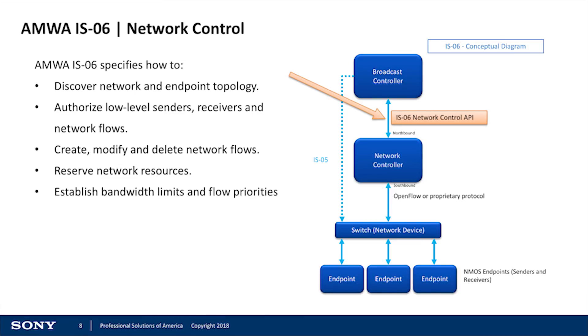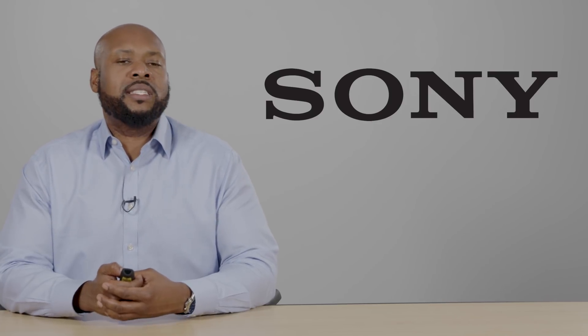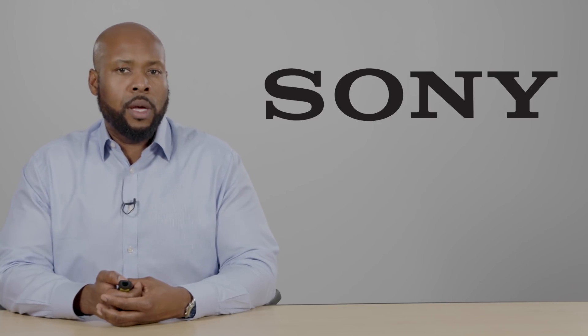IS-06 speaks to network control. It specifies how to discover network and endpoint topology, authorize low-level senders, receivers, and network flows, create, modify, and delete those network flows, and also reserve those network resources. One of the big things that IS-06 will bring to the table is the ability for a single network controller to control multiple endpoint devices no matter what manufacturer.